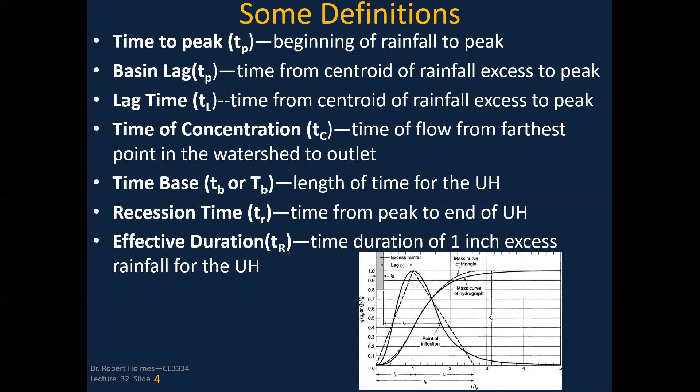Some definitions. Time to peak T_p is the time from the beginning of rainfall to the time of the peak. Basin lag is the time from the centroid of excess rain, which would be the middle part, to the peak. That's basin lag, sometimes abbreviated T_p, sometimes T_l. There's also lag time, the time from the centroid of rainfall excess to peak. Basin lag and lag time are sometimes used interchangeably.